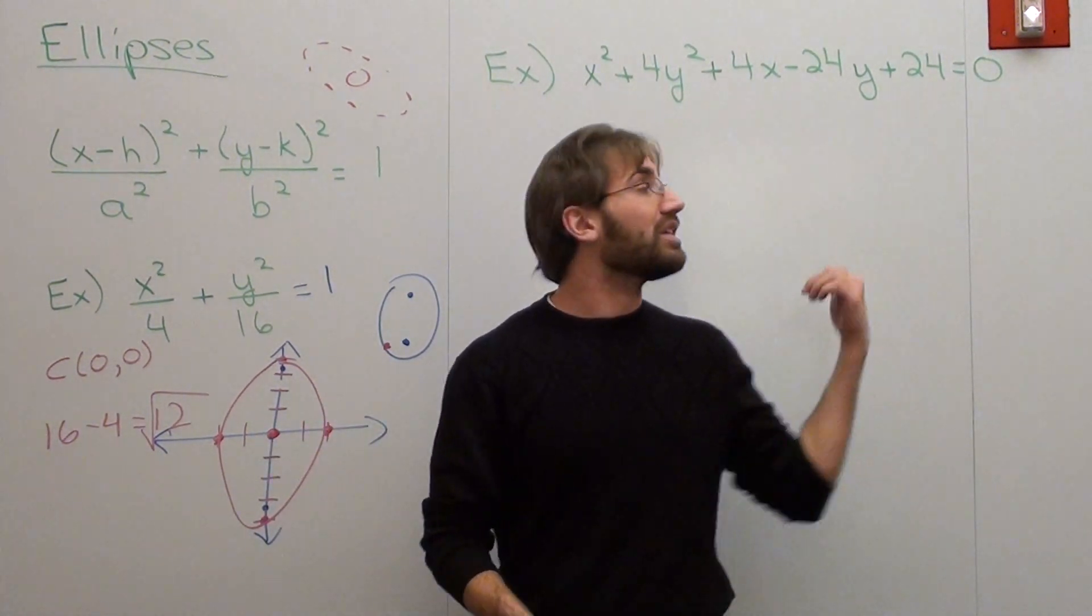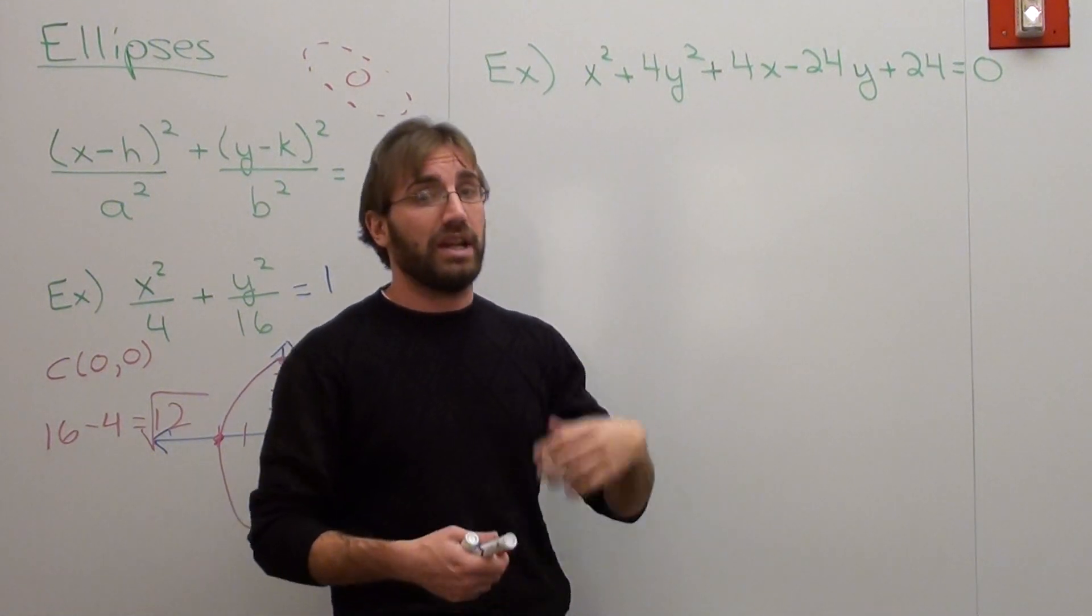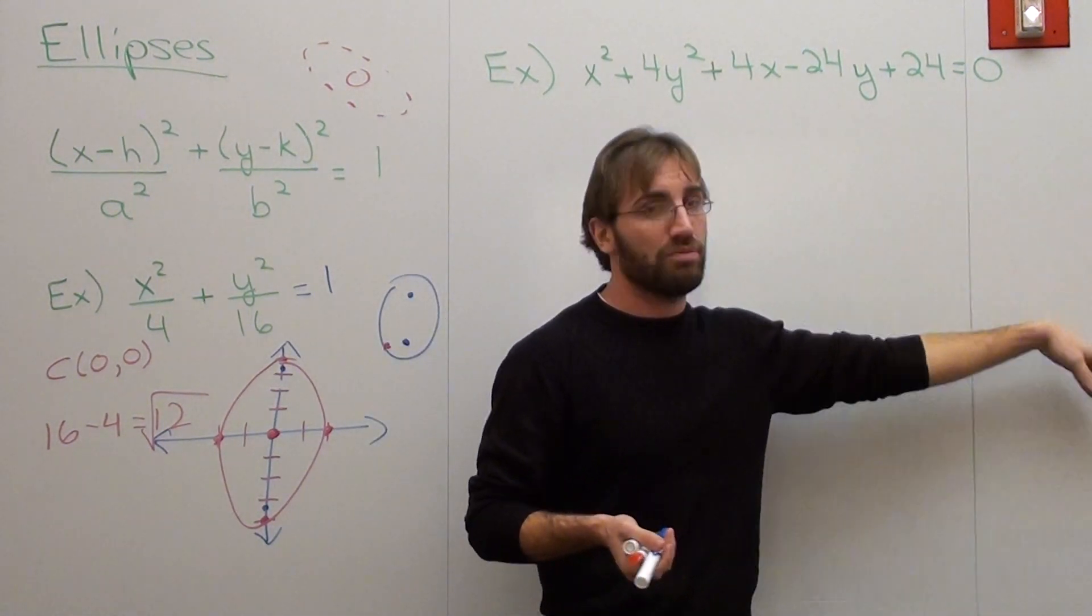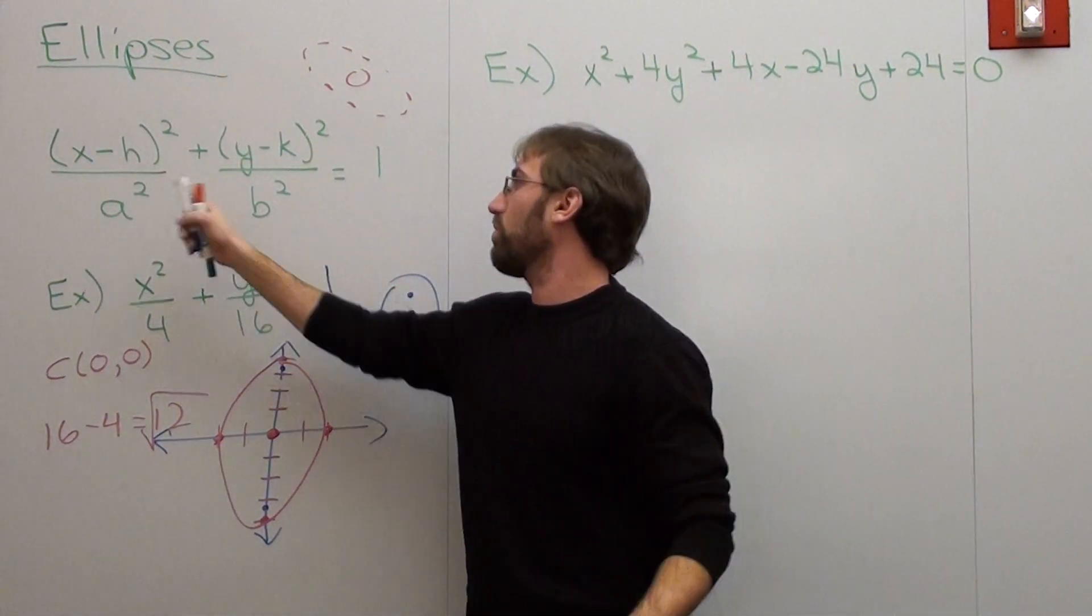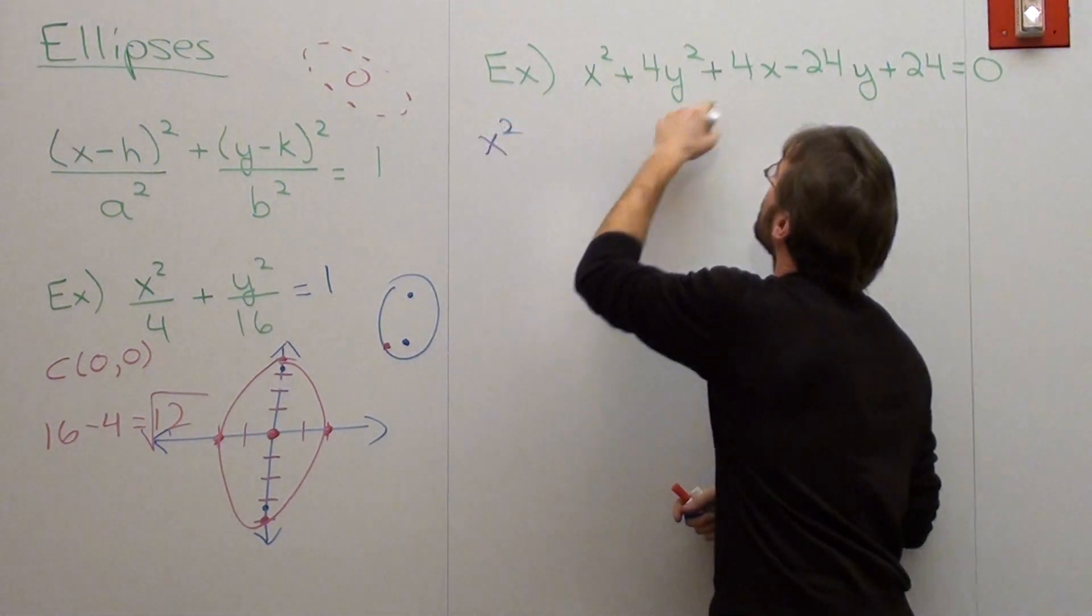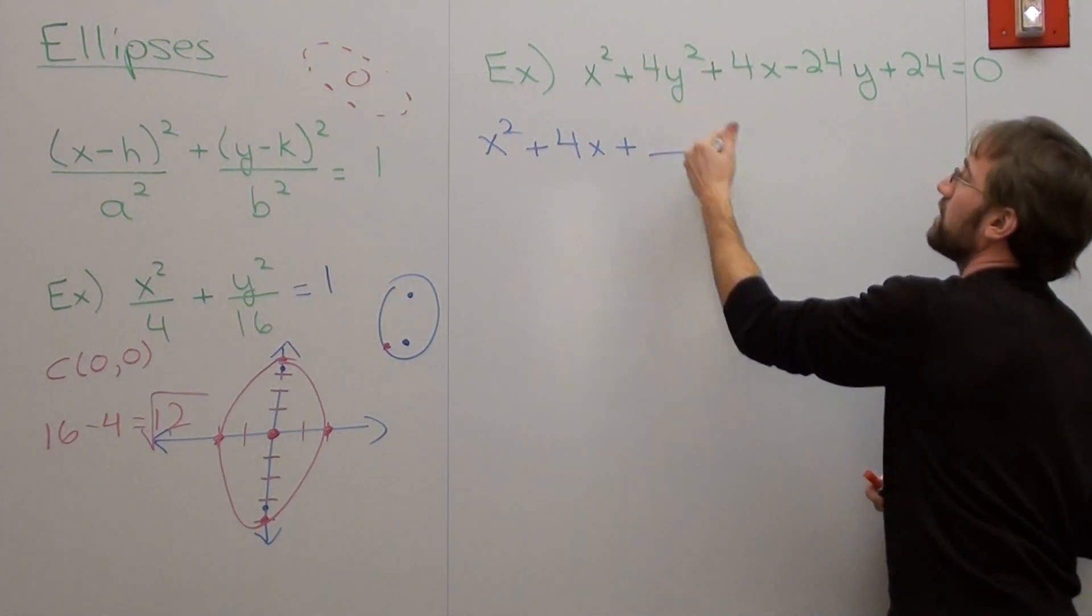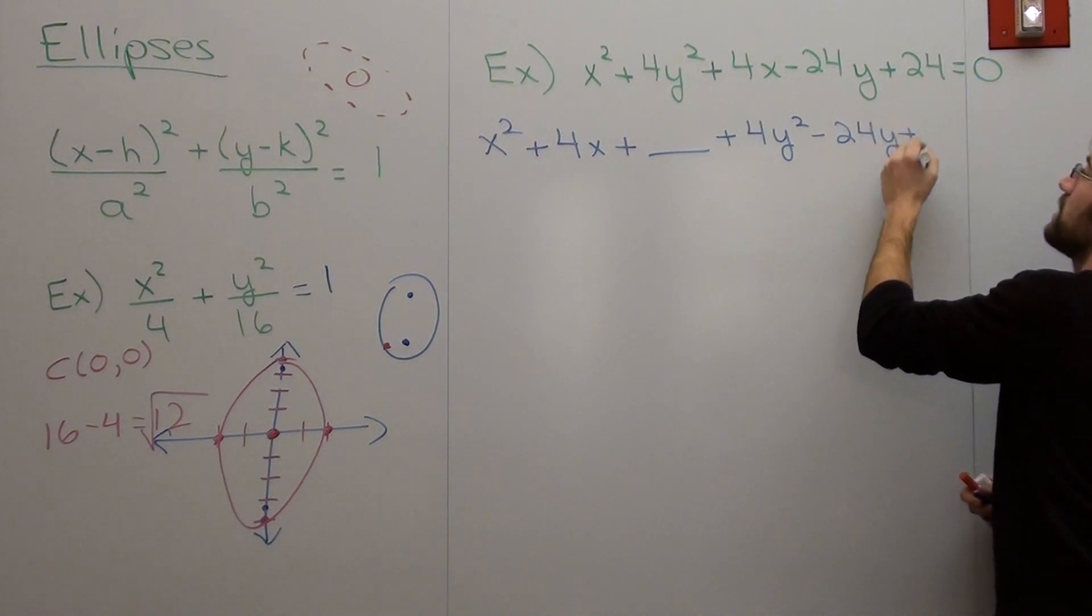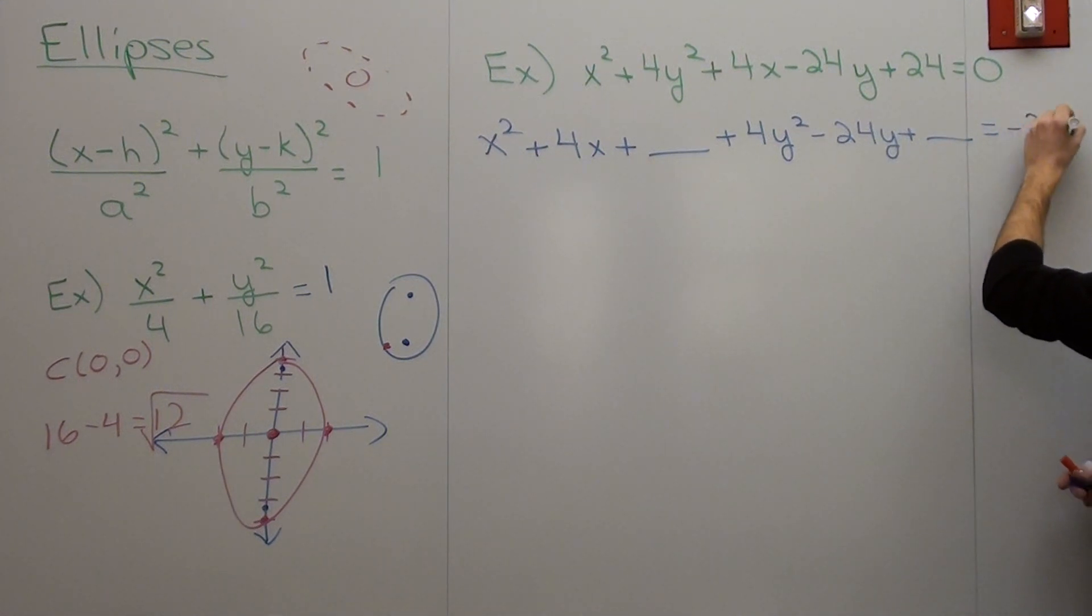So we're going to move on to this example right here where we've got x² + 4y² + 4x - 24y + 24 equals zero, and we're going to figure out how to solve it. Now, when you're graphing an ellipse, what you want to do is get all the x values together, get all the y values together, and anything without an x or y move to the other side. So what I'm going to do is I'm going to put all the x values together. x² + 4x + blank, and I'll show you what that means in a moment, plus 4y² - 24y + blank equals, and then subtract the positive 24 to the other side. So it's negative 24.